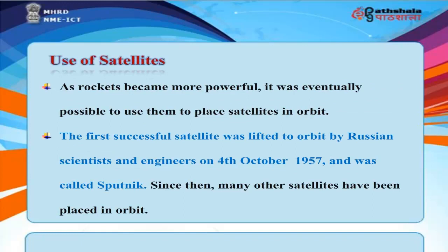Use of Satellites. As rockets became more powerful, it was eventually possible to use them to place satellites in orbit. The first successful satellite was lifted to orbit by Russian scientists and engineers on the 4th of October 1957 and was called Sputnik. Since then, many other satellites have been placed in orbit.